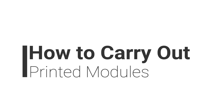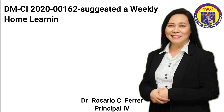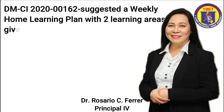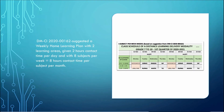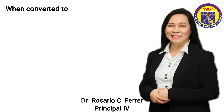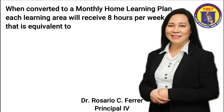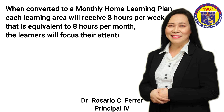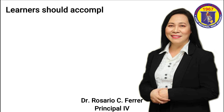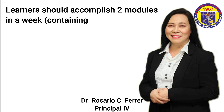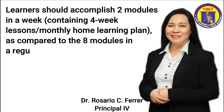This is how we will carry out our printed modules. The MCI 2020-00162 suggested a weekly home learning plan with 2 learning areas, given 2 hours contact time per day and 8 subjects per week, equivalent to 8 hours contact time per subject per month. When converted to a monthly home learning plan, each learning area will receive 8 hours per month. The learners will focus their attention on 2 subjects per week rather than 8 different subjects per week, accomplishing 2 modules in a week containing 4 weeks of lessons — what we call the monthly home learning plan — as compared to 8 modules in a regular weekly home learning plan.